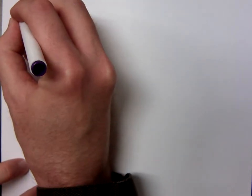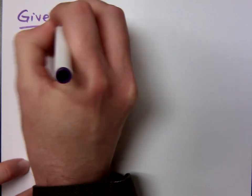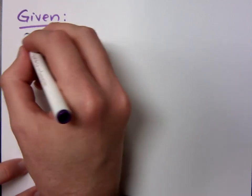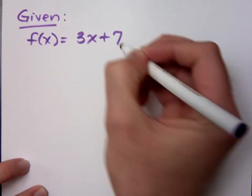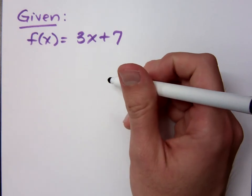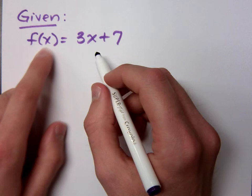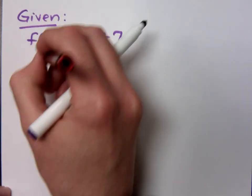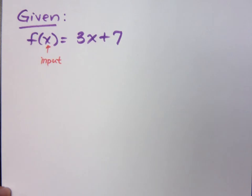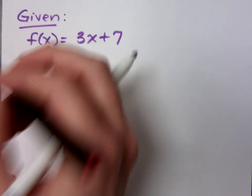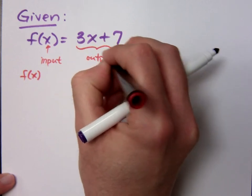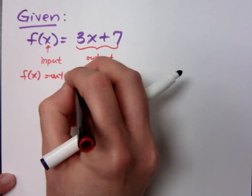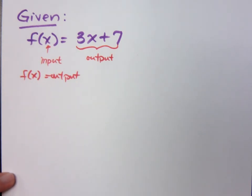I want us to look at evaluating functions. So if I were to give you this: given f(x) is equal to 3x plus 7, I'm telling you how the relationship works. This x, that x is your input value. And then f of x, this whole guy right here, that's your output. So you plug in numbers and you get numbers out.